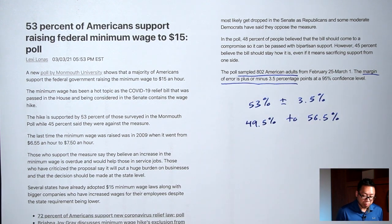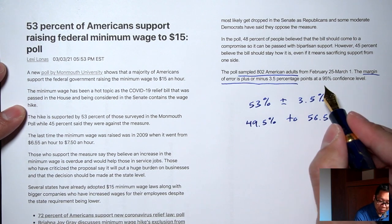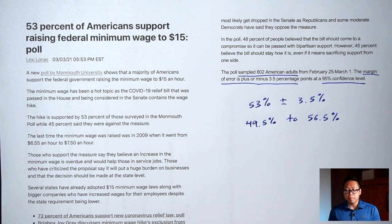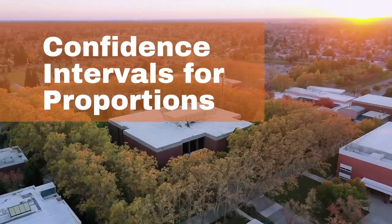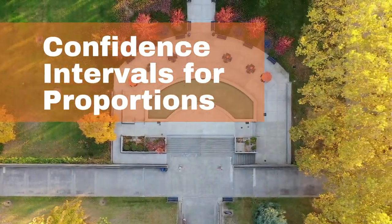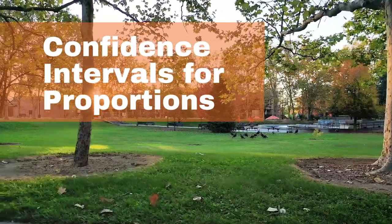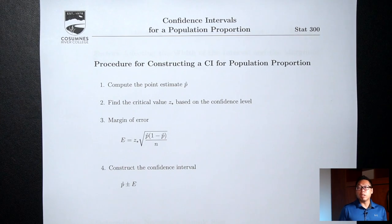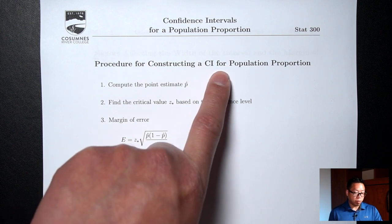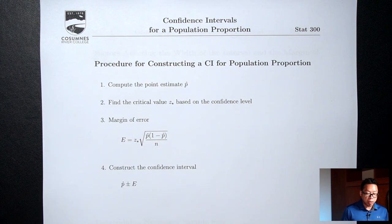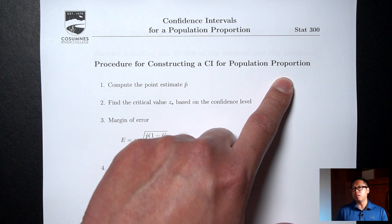And finally, what is this 95% confidence level? This is an example of what's called a confidence interval, which is going to be the focus for our next unit. How do we construct a confidence interval? CI stands for confidence interval for a population proportion. Today we're interested in the proportion of the population that has a certain characteristic — for example, the proportion of Americans that supported raising the minimum wage.